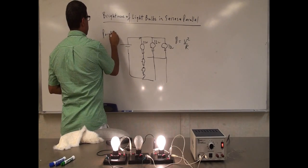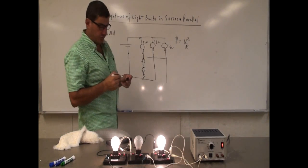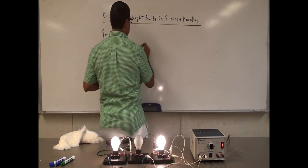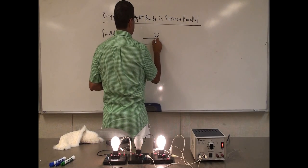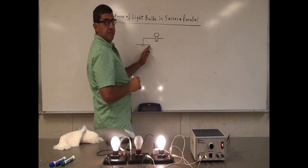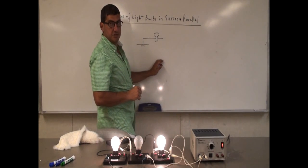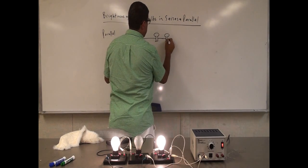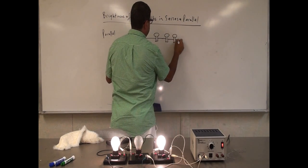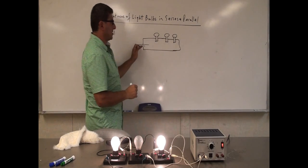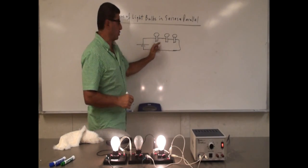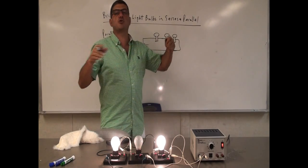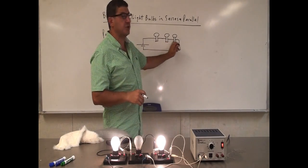This is called parallel. Now let me show you how series works. In series, you have the battery and then the light bulb. What it means to be in series is that they share the same current — not the same voltage, but the same current goes through this light bulb, then through another light bulb, then through a third light bulb, and then you close the circuit. So they split the voltage.